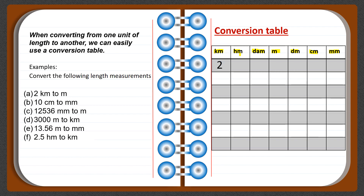When converting from larger units like kilometers to smaller units, we fill in with zeros. First locate the asked unit — in this case, meter. After locating it, fill in with zeros until you reach the meter column. So two kilometers equals 2,000 meters.